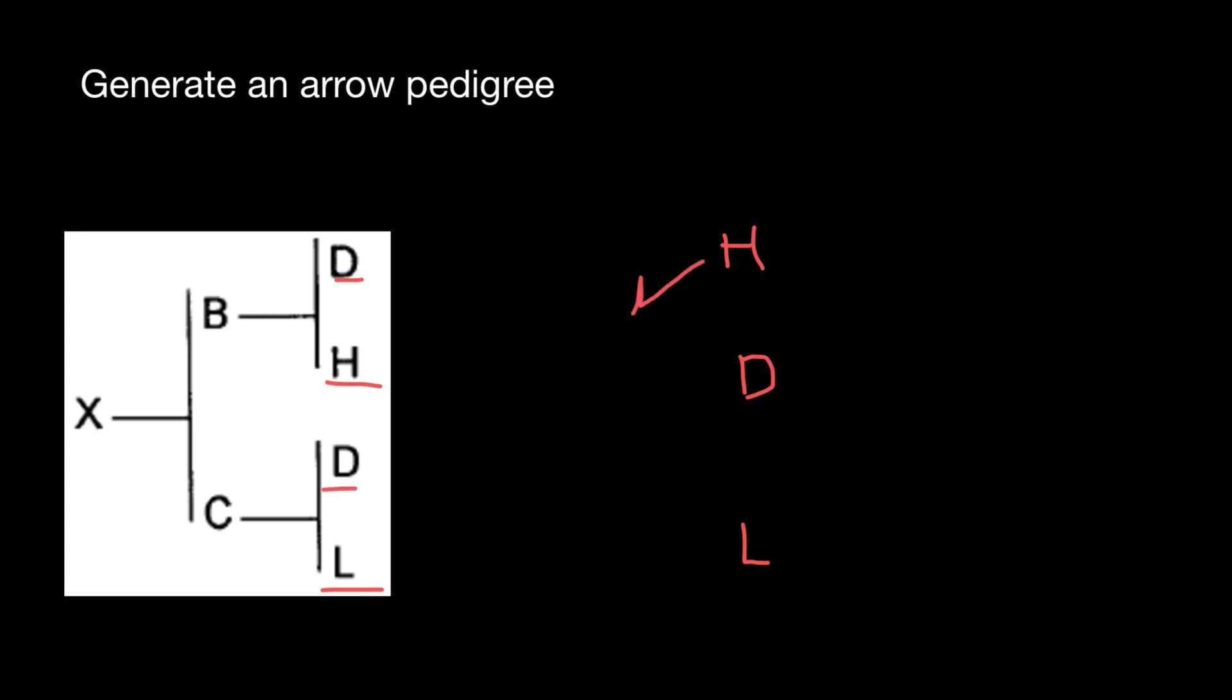So this is going to be contribution of the genes from the parent H and from the parent D. So here's the individual B. And also parent D and L contribute their genes to individual C. Here is also gene flow going to be as follows. So this is going to be individual C.